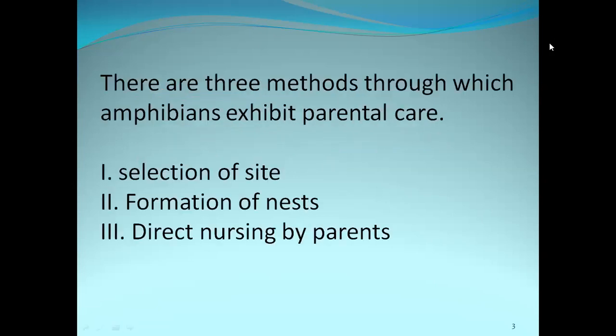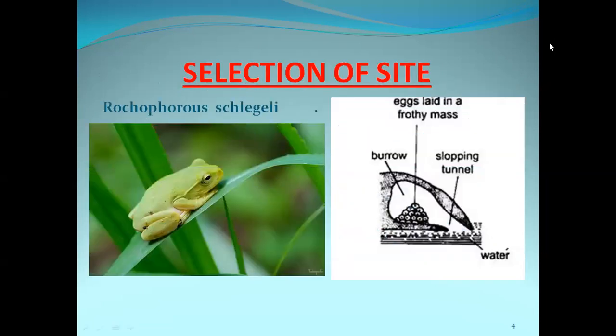There are three types of methods through which amphibians exhibit Parental Care. One is Selection of Sites, second one is Formation of Nests, and the third one is Direct Nursing by Parents. Let us see the first category of Parental Care, that is Selection of Sites.